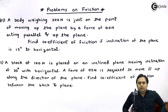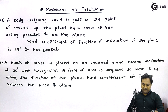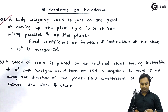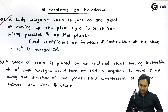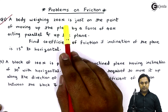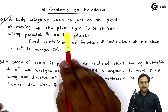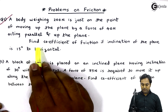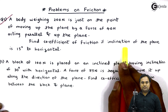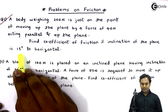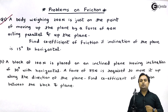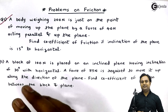Hello students, let us take some problems on the topic of friction. We will start with the first problem. Question number one: a body weighing 200 Newton is just on the point of moving up the plane by a force of 40 Newton acting parallel and up the plane. Find the coefficient of friction if the inclination of the plane is 15 degrees to horizontal. We will first write the data and then solve the problem.